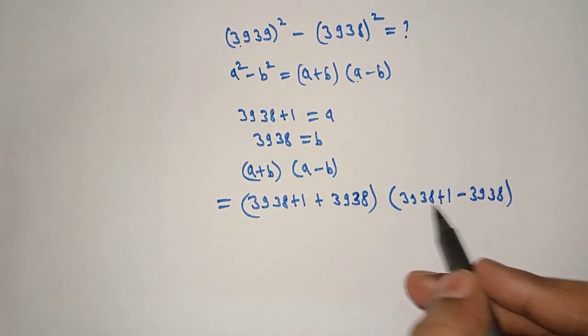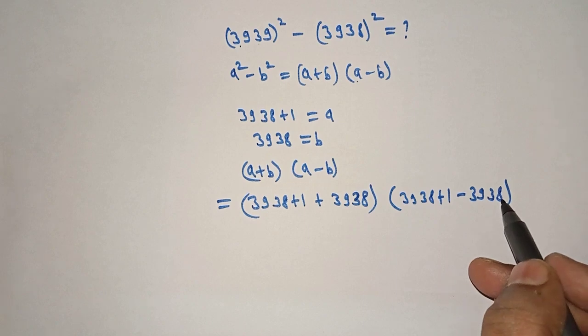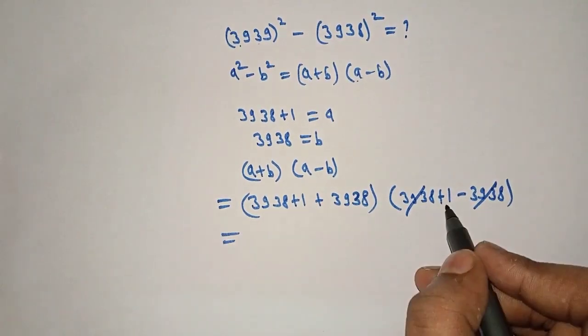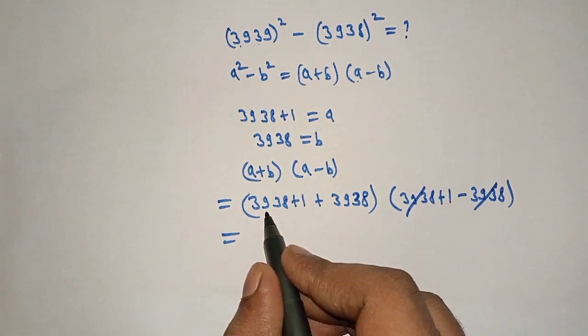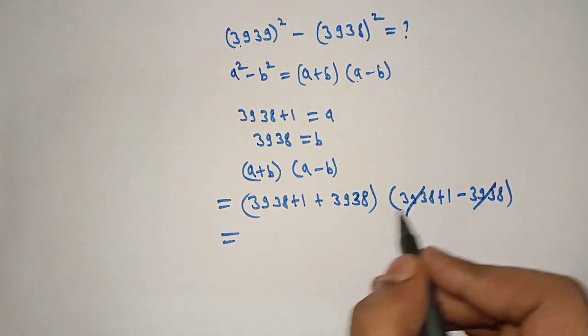Here plus 3938 minus 3938 cancels. Here remains only 1. Therefore, this into 1 is this.